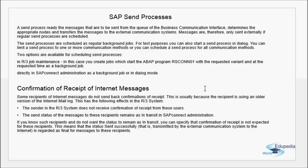Regarding confirmation of receipt for internet messages: some recipients do not send back a confirmation, usually because they're using an older version of the internet mail protocol. As a result, the sender in the R3 system does not receive confirmation and the send status remains as 'in transit' in SAP Connect administration. If you don't want that status to remain as 'in transit,' you can specify that confirmation of receipt is not expected for those recipients, meaning 'transmitted by external communication system' is regarded as final.